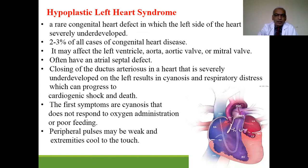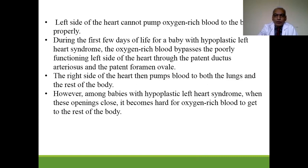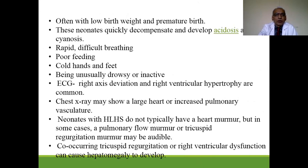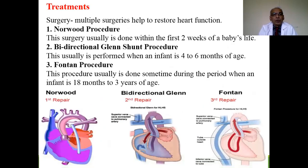Peripheral pulses are very weak and the extremities are cold, as the left heart cannot pump oxygenated blood to the body properly. ECG shows right axis deviation and right ventricular hypertrophy. Chest X-ray shows a large heart with increased pulmonary vasculature. Multiple surgeries are required, including the bi-directional Glenn shunt and Fontan procedure.